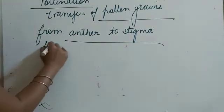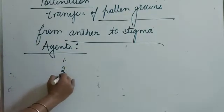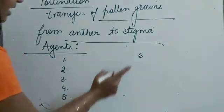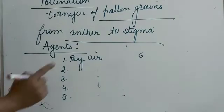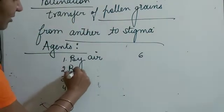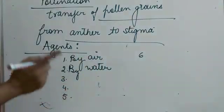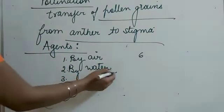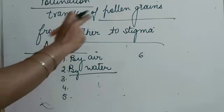The agents of pollination — those that carry pollen grains to the stigma — include several types. The first agent of pollination is air, where pollen grains fly with the wind and reach the female stigma. The second agent is water. In aquatic plants, water is responsible for transferring the pollen grains from the anther to the stigma. Aquatic plants also have a typical flower with all the parts.